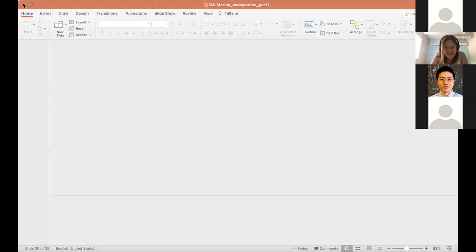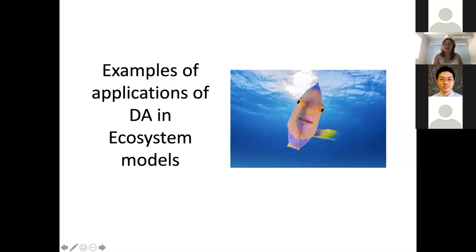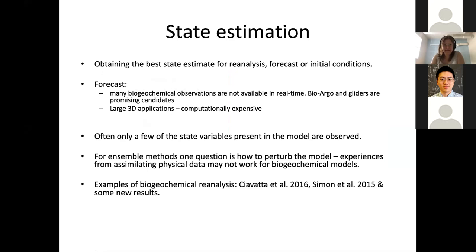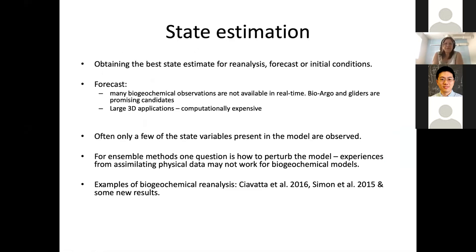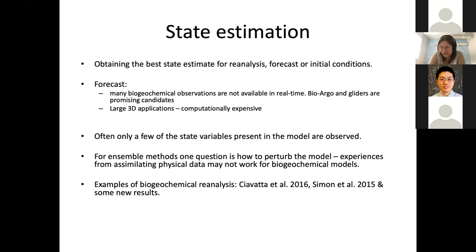Now moving to published examples of data assimilation in ecosystem models, mostly biogeochemical. The first examples are on state estimation — obtaining the best state for reanalysis, forecast, or initial conditions. The first example is Shiawata et al. 2016, and then one from our group, Simon et al. 2015.